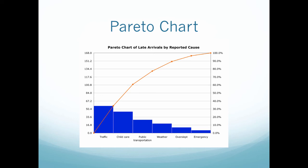The line at the top of the graph is a point-to-point graph which shows the cumulative relative frequency. The units on that axis are in terms of percentages. We take whatever percentage said traffic — so 55 out of 168, which is about a third — and then add that to whatever percentage said child care, then add that to public transportation, and so on until we reach 100%. This is superimposed on the bar graph so we can easily visualize the percentages of each value.